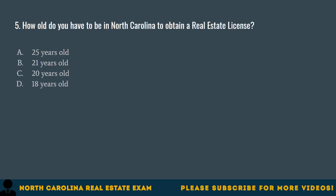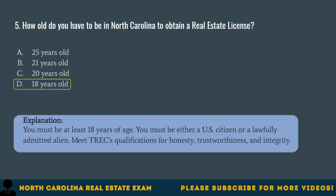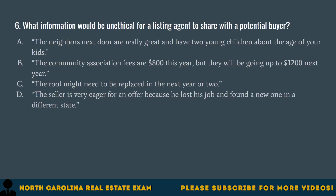Question 5. How old do you have to be in North Carolina to obtain a real estate license? A. 25 years old. B. 21 years old. C. 20 years old. D. 18 years old. The correct answer is D. 18 years old. You must be at least 18 years of age, either a U.S. citizen or a lawfully admitted alien, and meet TREC's qualifications for honesty, trustworthiness, and integrity.